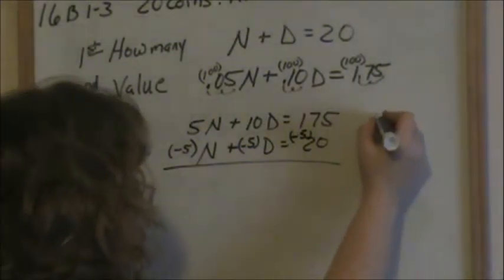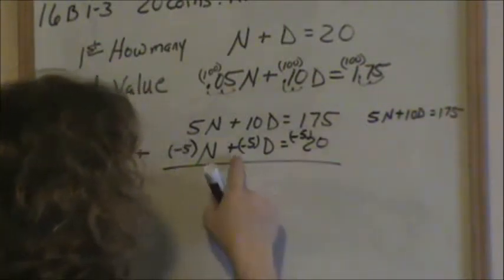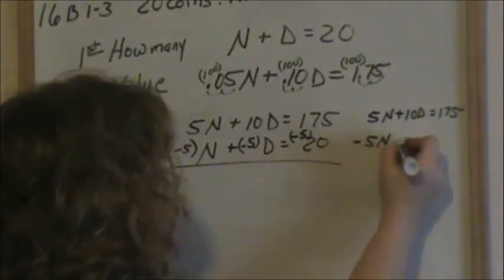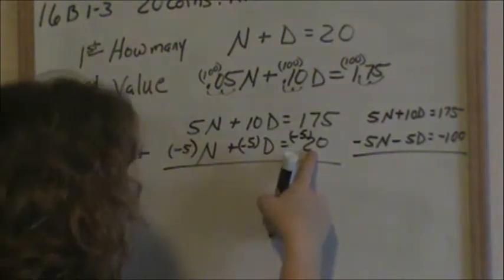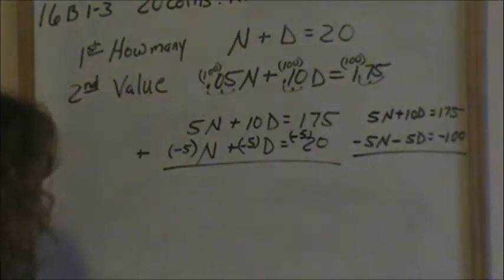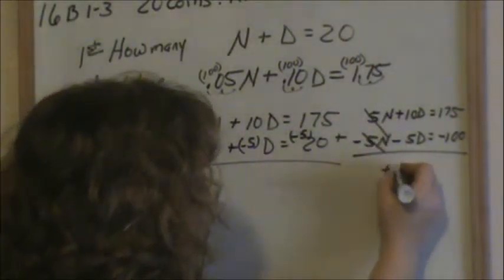So now my new equations are: the top equation, 5n plus 10d equals 175, did not change. My second equation became negative 5n minus 5d equals negative 100 — because negative 5 times 20 is negative 100. Now I'm adding my equations, and the n's eliminate. Positive 10d and negative 5d gives positive 5d. 175 minus 100 is 75.